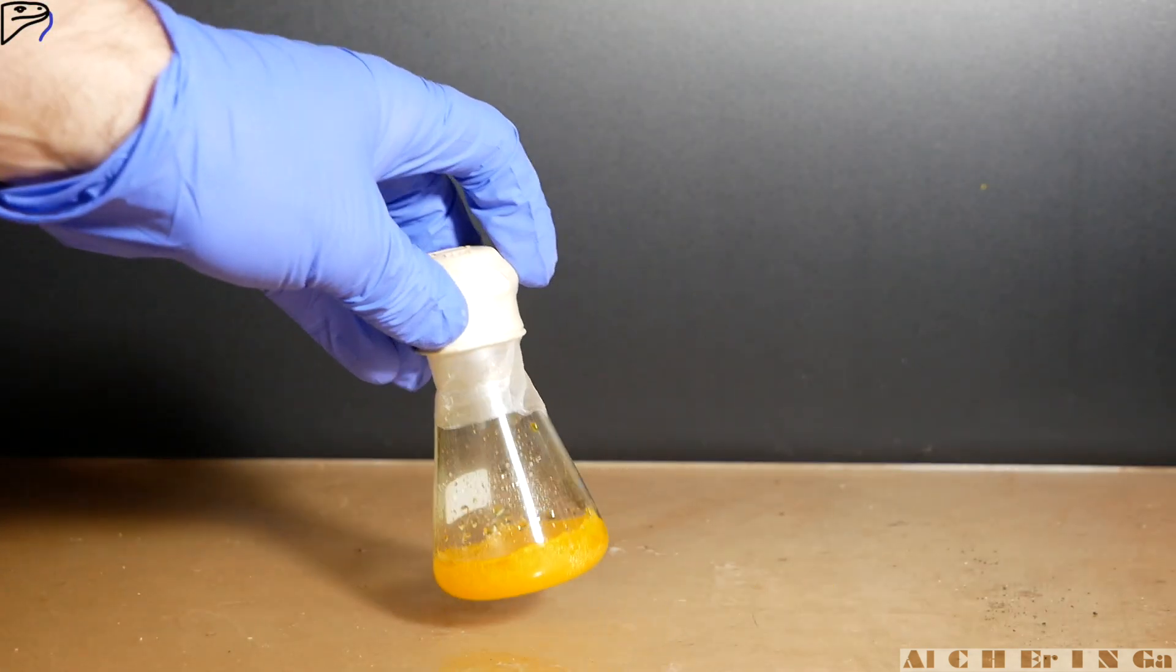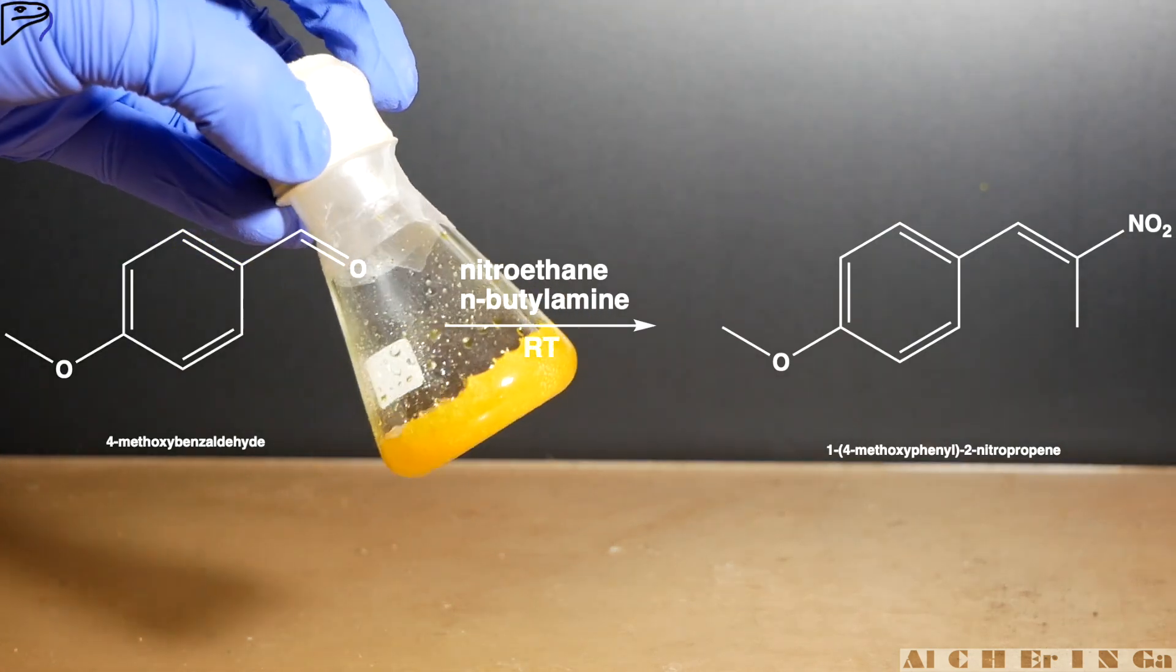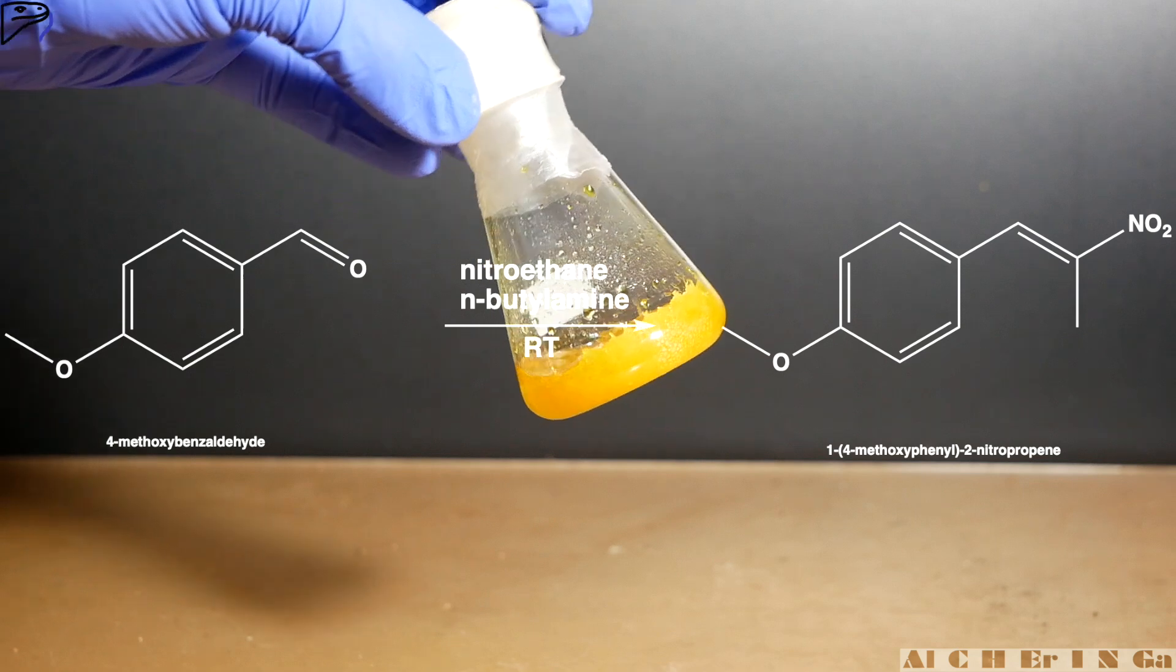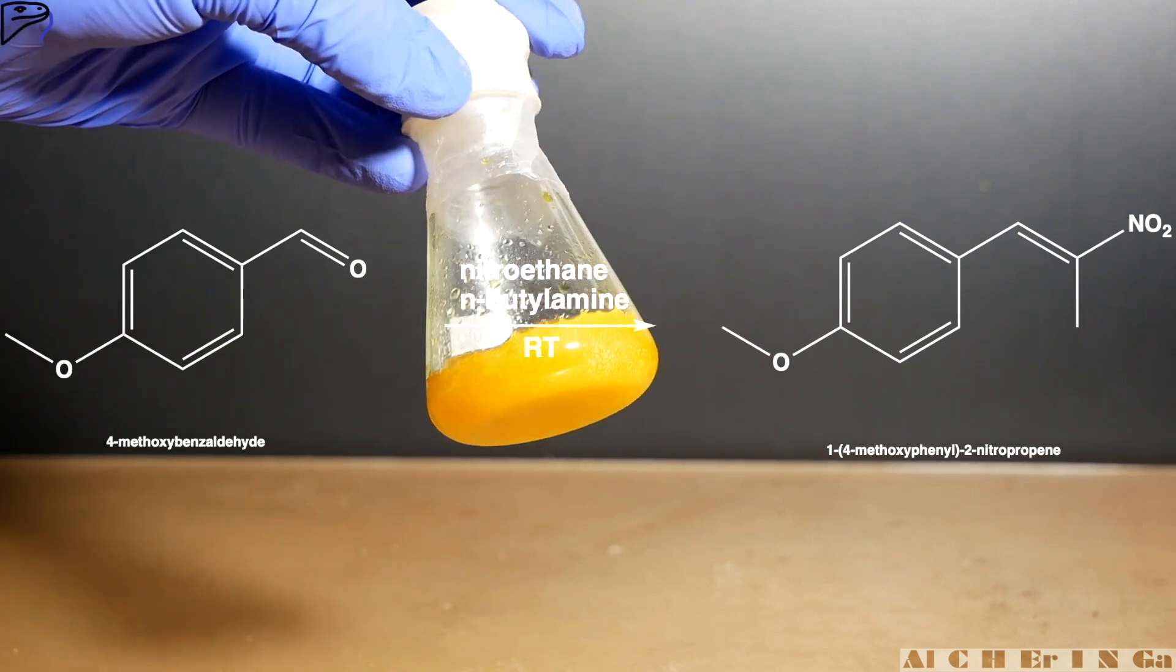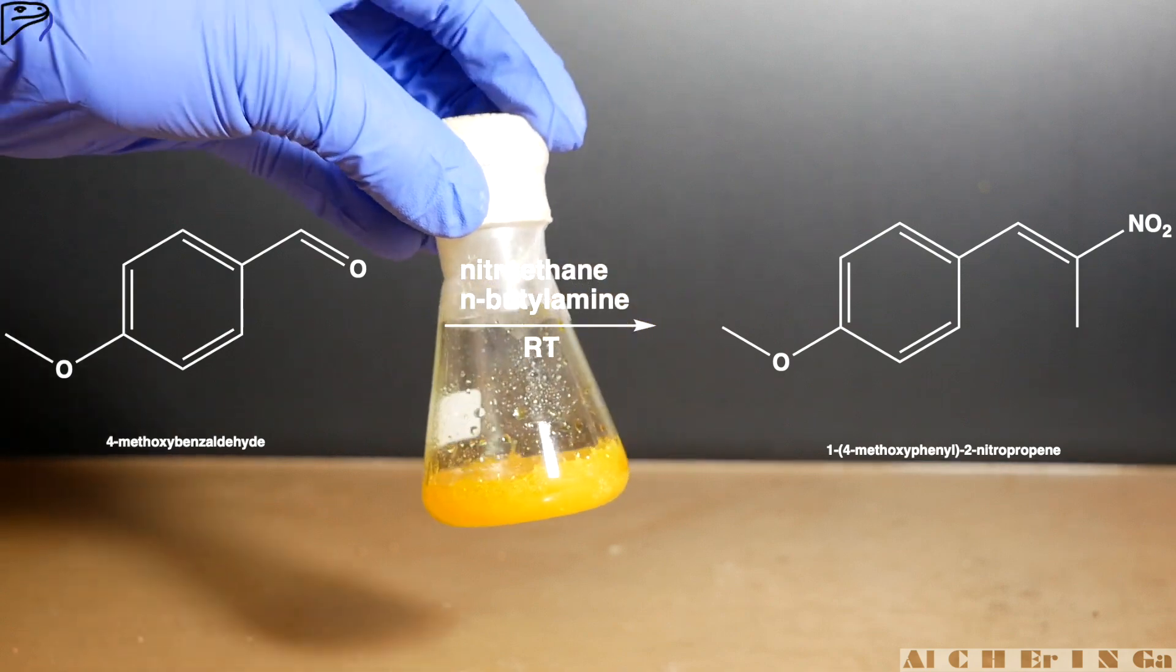Let's have a look at the chemistry. 4-methoxybenzaldehyde and nitroethane react with a catalytic amount of N-butylamine at room temperature for 14 days to produce 1-4-methoxyphenyl-2-nitropropene as a yellow crystalline solid.